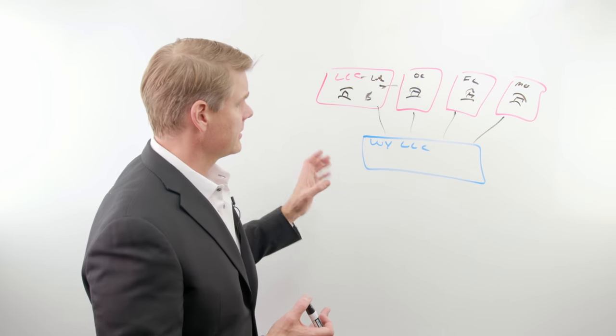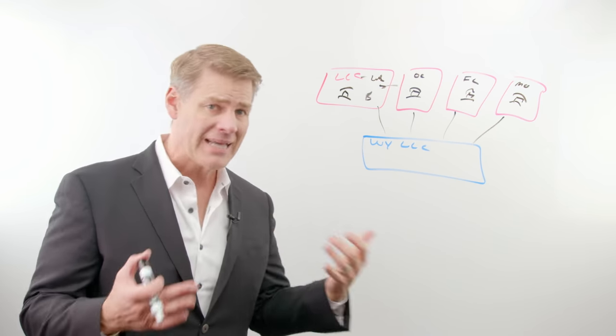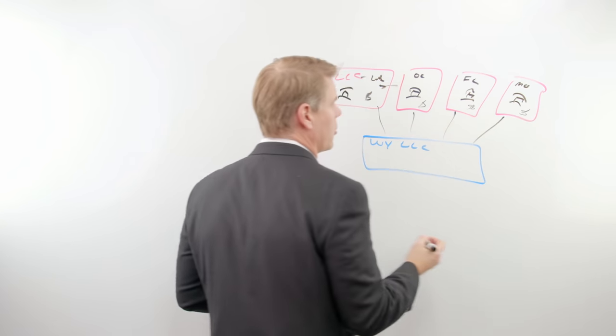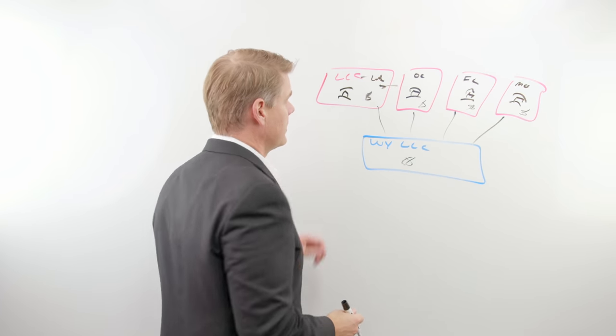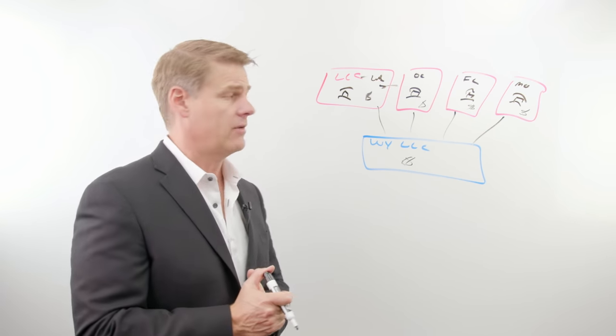Well, the way I always look at this is you've got better and best. Now the best scenario I'm going to tell you is always to set up one bank account per LLC. So in this case, you're going to have five bank accounts. Each LLC is going to have its own bank account.